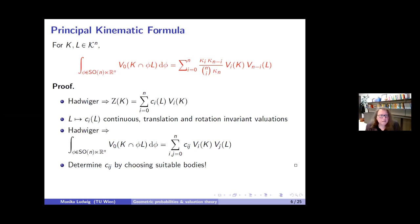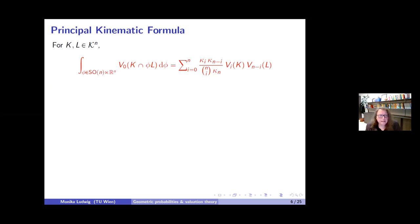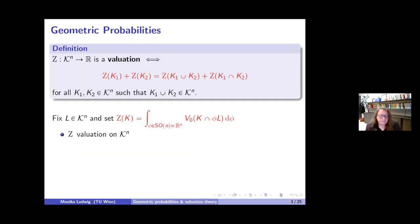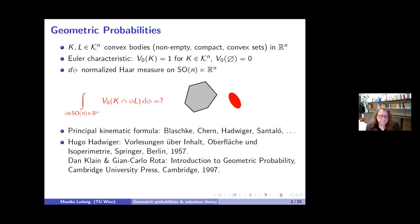This is an application of Hadwiger's theorem to a question in geometric probability. I should mention the book by Klain and Rota where these ideas are explained in more detail, and there is also the classical book on geometric probability to explain these notions.